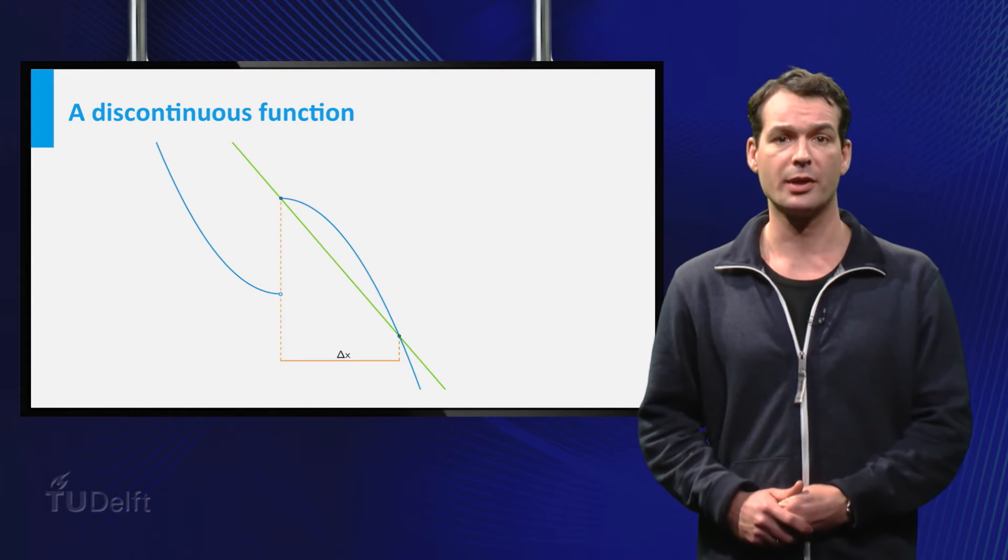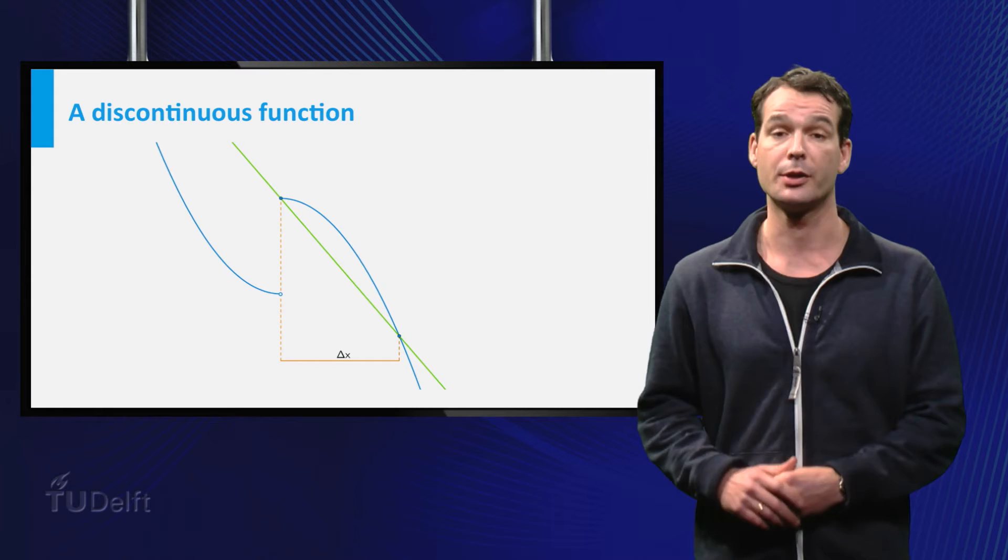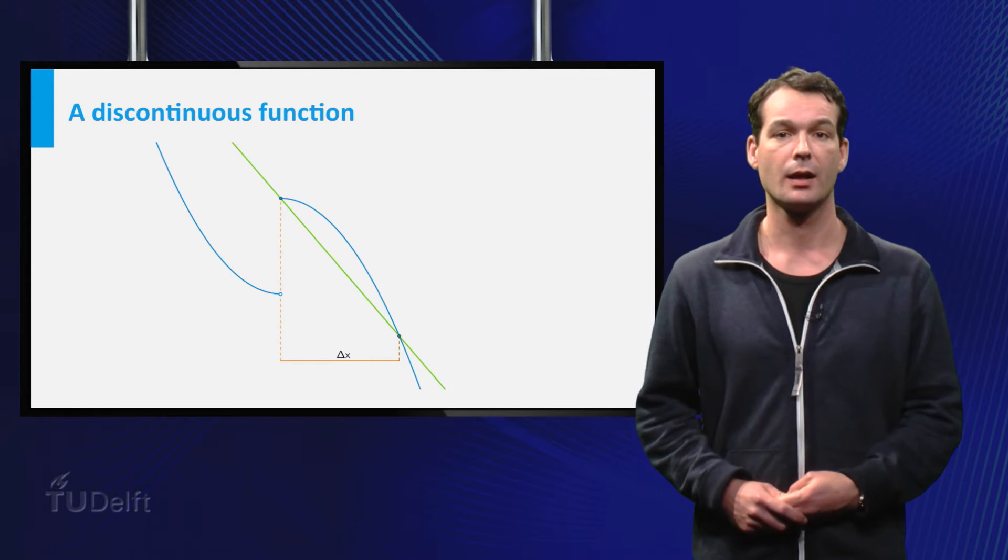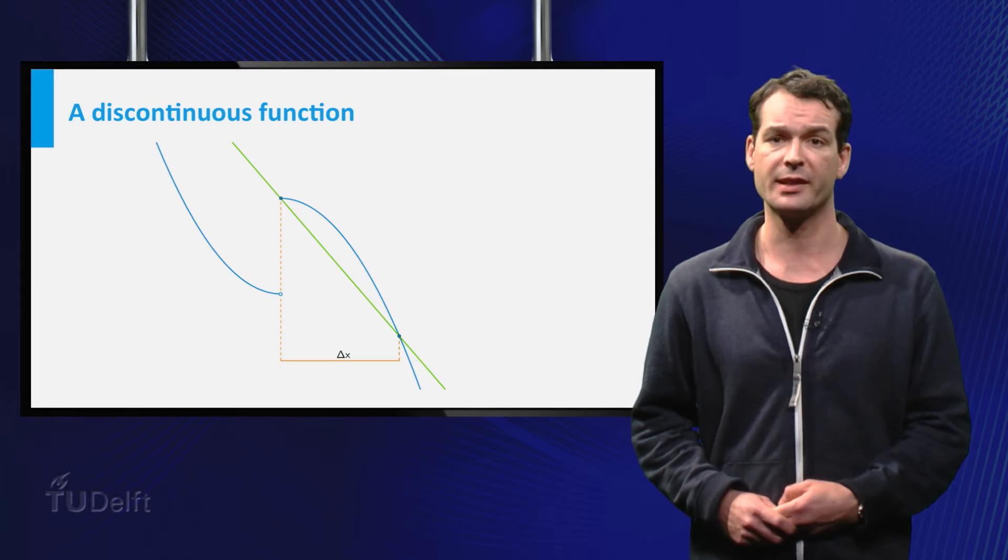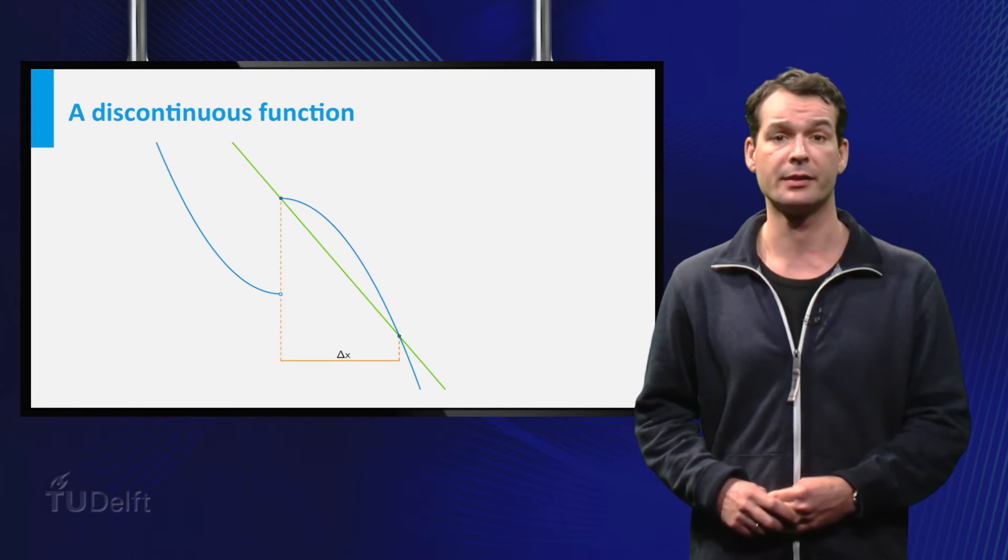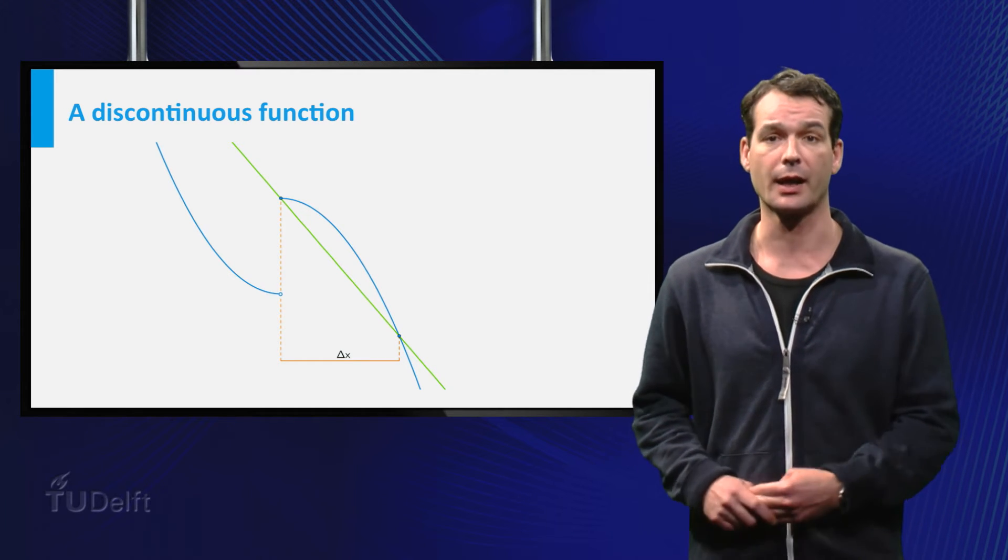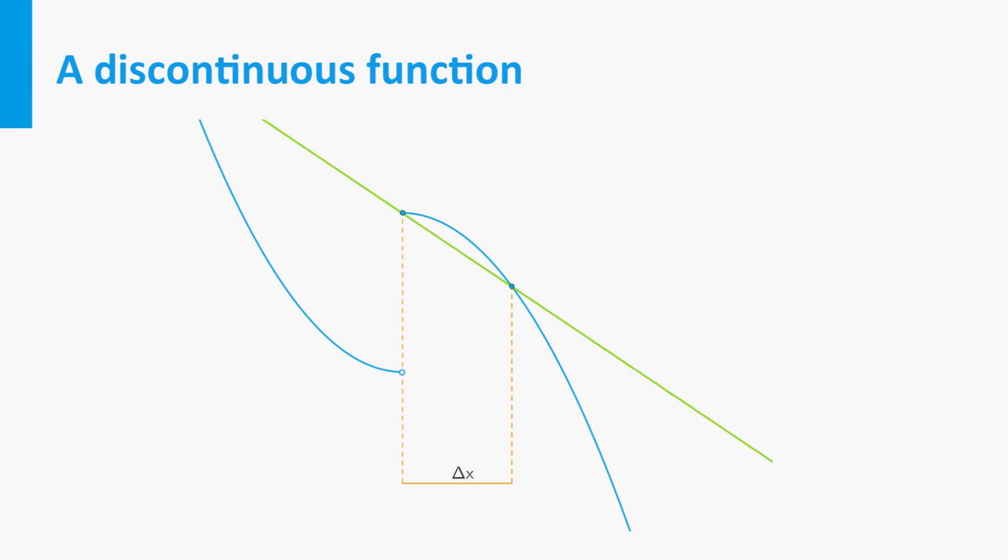Our first example is a function with a jump at A, so a non-continuous function. Let's see if we can approximate a tangent line at A. First we take delta x positive and then the difference quotient is the slope of the green line. Now if we let delta x go to zero we see that the green line approximates a horizontal line. This is our candidate for the tangent line.